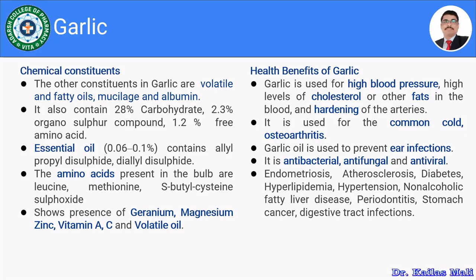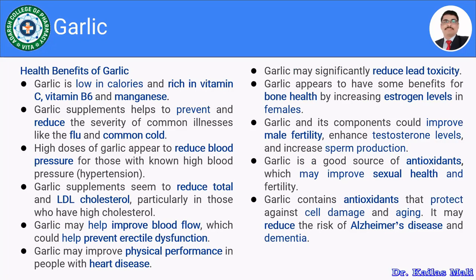Garlic has antibacterial, antifungal, and antiviral properties. Its main uses include endometriosis, arteriosclerosis, diabetes, hyperlipidemia, hypertension, non-alcoholic fatty liver disease, periodontitis, stomach cancer, and digestive tract infections. Garlic is low in calories and rich in vitamin C, vitamin B6, and manganese, making it a nutraceutical source for certain vitamins.